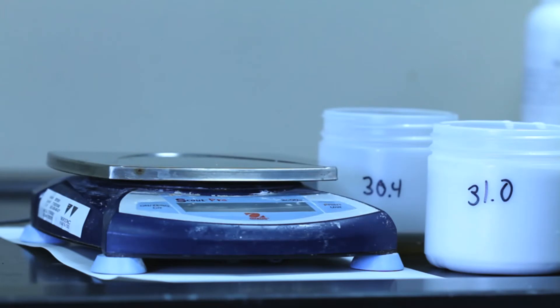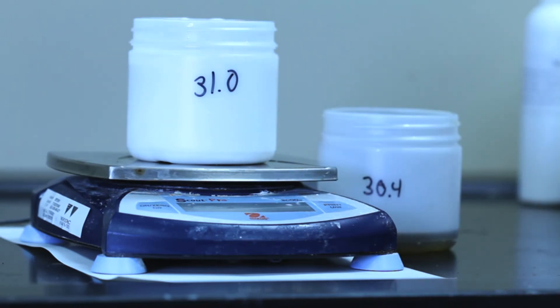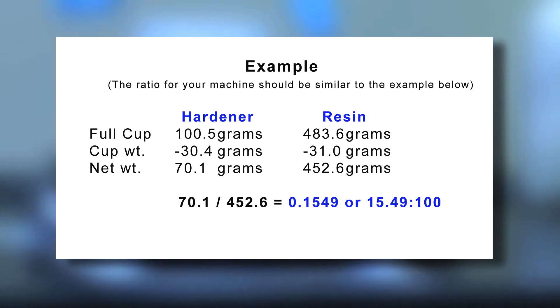Re-weigh the now partially full cups of resin and hardener and record the weight. Make sure to subtract out the weight of the cup to determine the amount of each component in the cup. Divide the weight of the hardener by the weight of the resin. This mixer is set up for a 15.5 to 100 ratio, which would be 0.155.